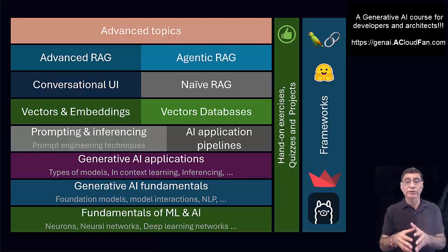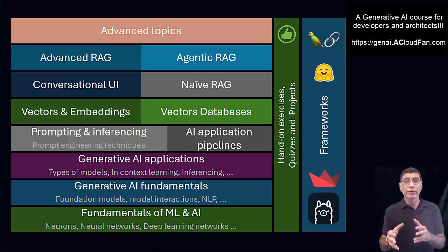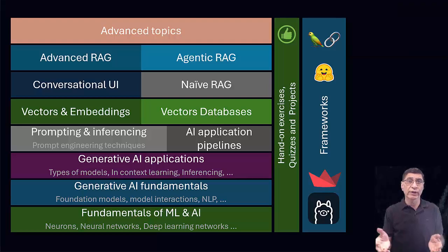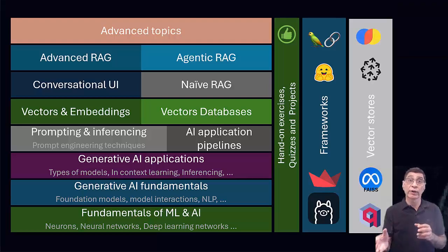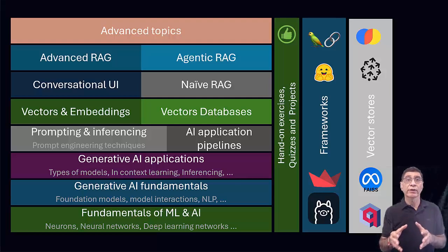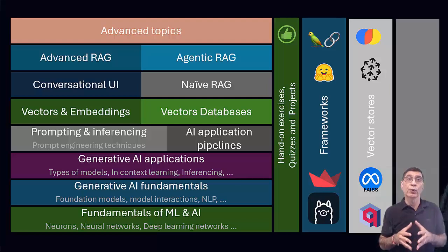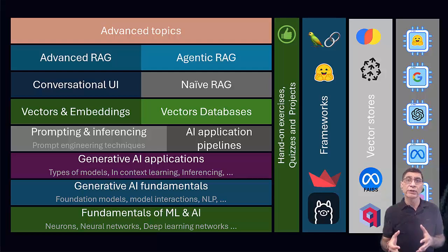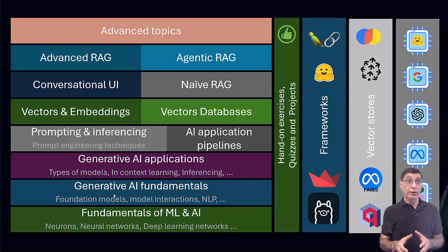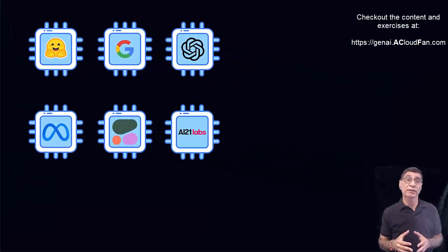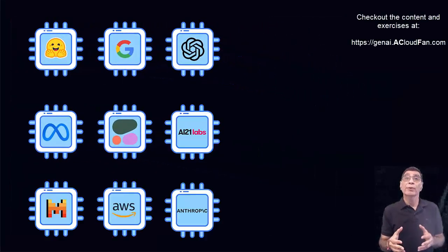You will get hands-on experience with leading frameworks such as LangChain, Streamlit, and Hugging Face, along with vector stores like ChromaDB and Pinecone. The course doesn't rely on a single Generative AI model — you will experiment with dozens of large language models from various providers. In fact, you will be encouraged to try out multiple models for each hands-on exercise, so you can appreciate the nuances of their behaviors.